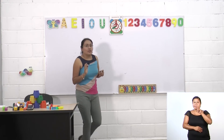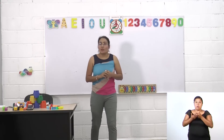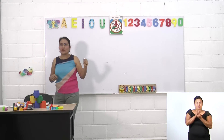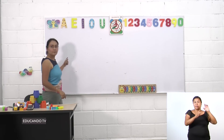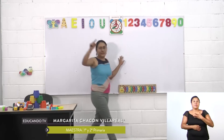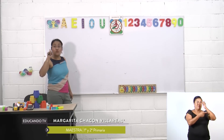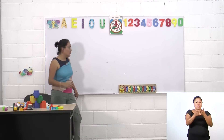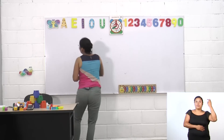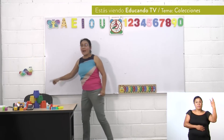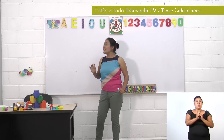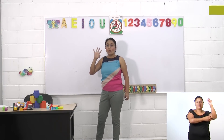Observa a tu alrededor. En este momento, puedes encontrar en esta aula una colección en el pizarrón. ¡Exacto! Tenemos una colección de uno en el pizarrón. Tenemos una colección de cuatro: una, dos, tres, cuatro esquinas. Esa es una colección de esquinas de pizarrón que forman el elemento cuatro.